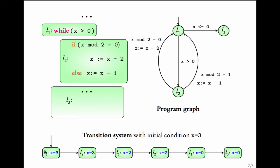The program is initially in location L1 with x equal to 3. Since x > 0, this transition is taken and the program goes to location L2 with the same variable value. At L2, since 3 is odd, x is reduced by 1, so the next state is L1 with x equal to 2. The while loop is entered again; since 2 is even, x is reduced by 2, giving L1 with x equal to 0. Since x equals 0, the program does not enter the while loop and instead goes to L3.